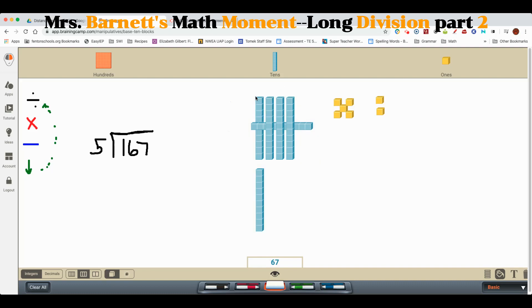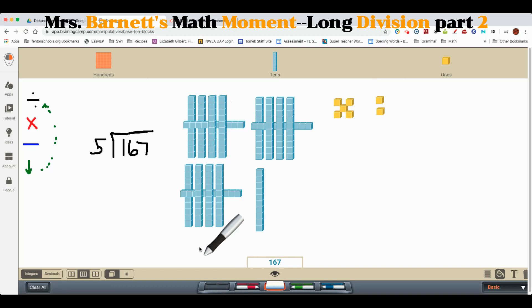Here's a group of five that I can copy already. Five, ten. So I took that hundred flat and made it into ten rods, which is exactly the same value. Put it with the six rods I already had and the seven units that I already had. I still have 167, but this time I am starting with 16 tens.